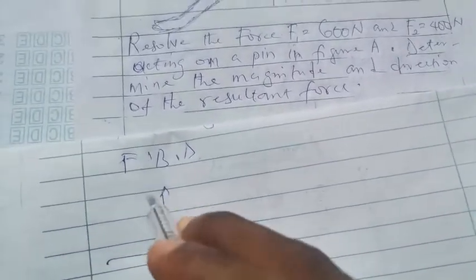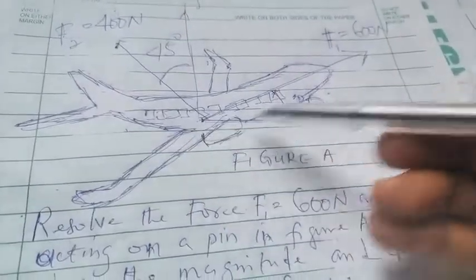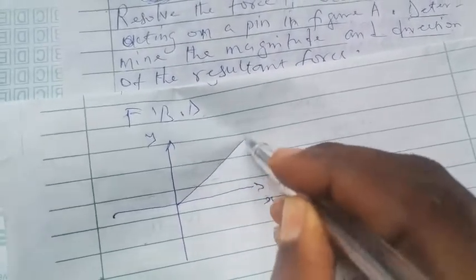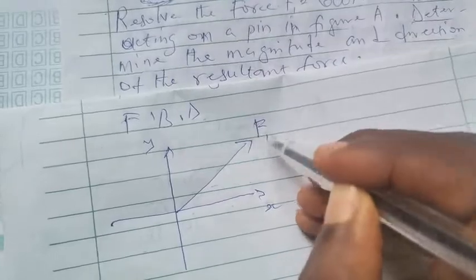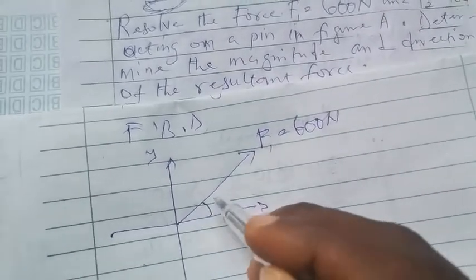So let this be X these are Y component force and from the origin we have a force 600 Newton from the origin inclined at 30 degrees to the horizontal. So from the origin one force 600 Newton which is F1, inclined at 30 degrees to the horizontal.